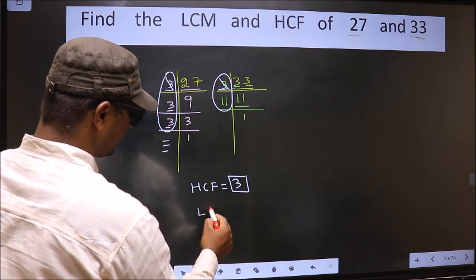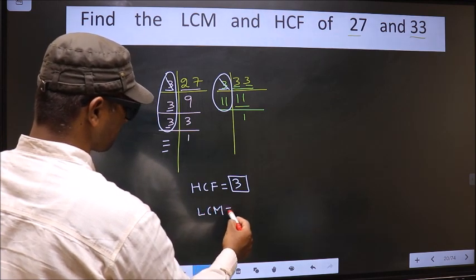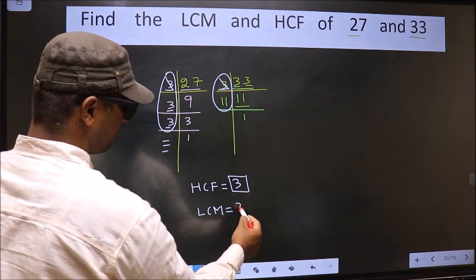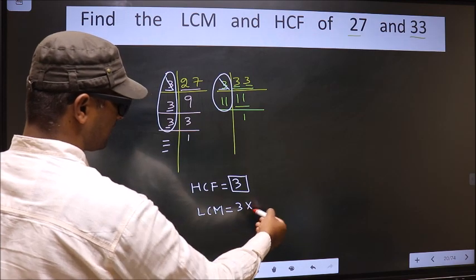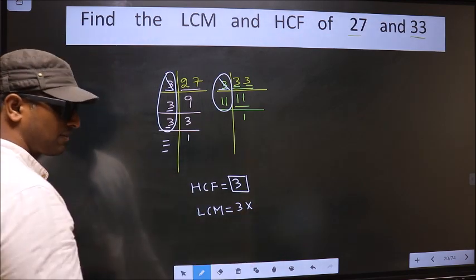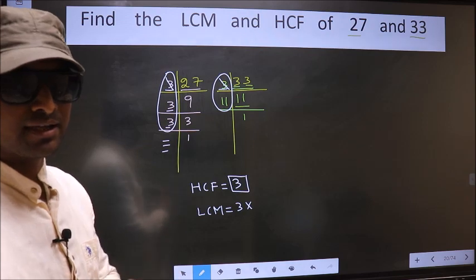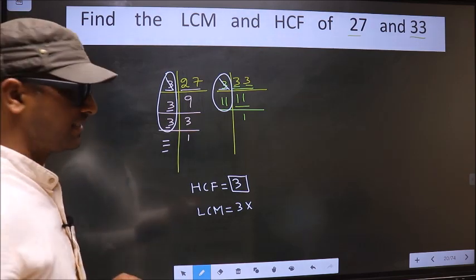Now to get LCM. Whatever HCF we got, we should multiply it by the numbers which we did not cut. What I mean is this.